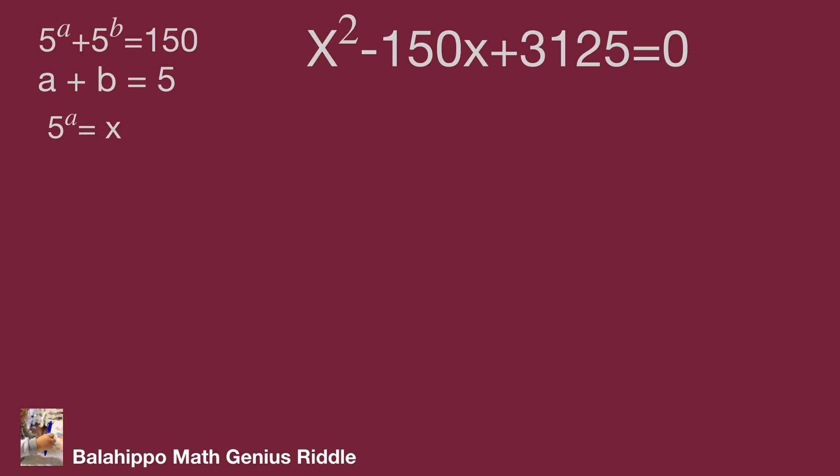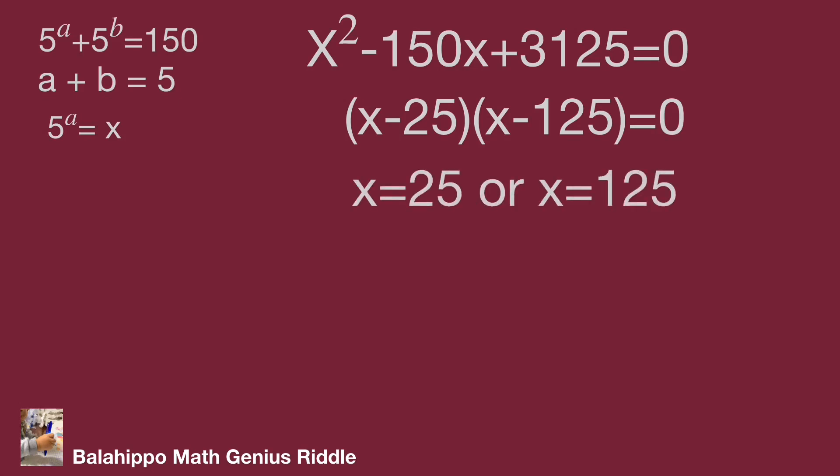Factorization, we get quantity x minus 25 multiplied by quantity x minus 125 equal to 0. So x equal to 25 or x equal to 125.